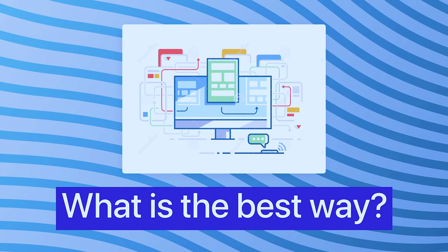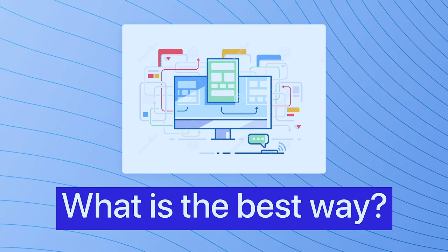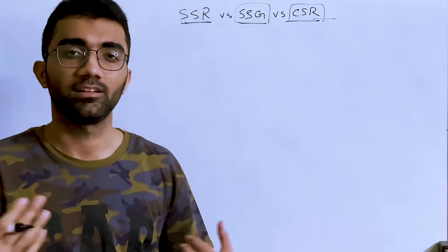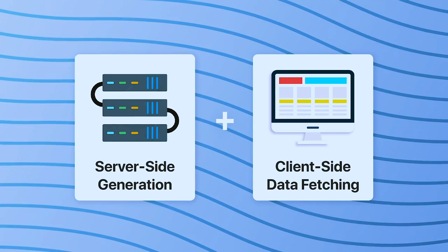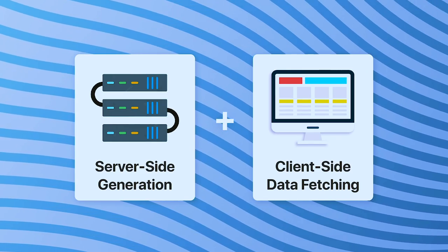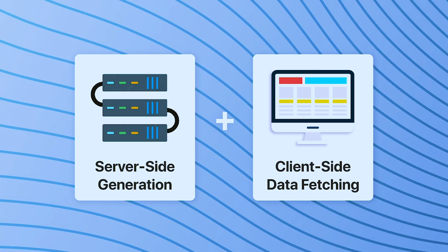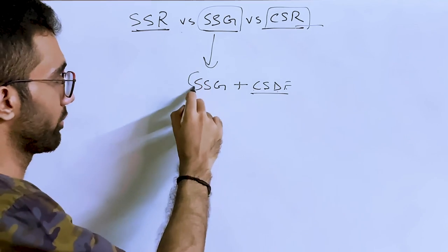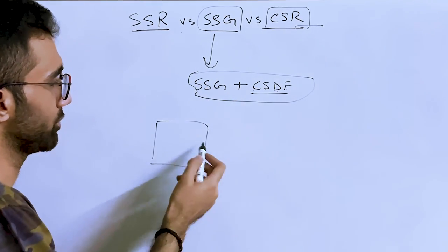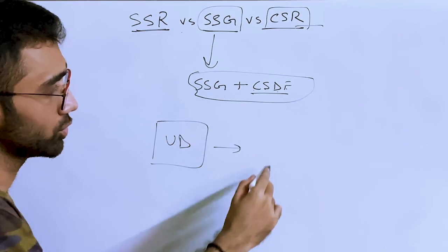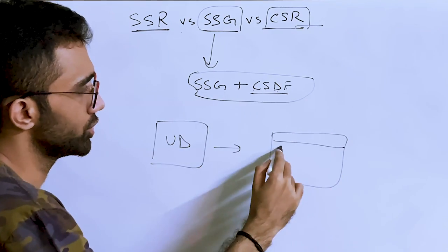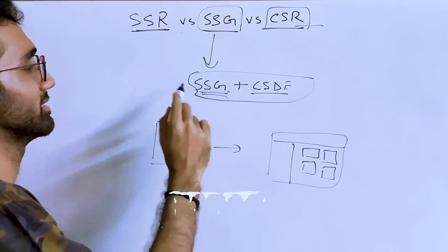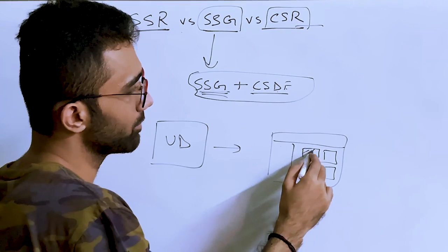What is the best way to structure websites? Server-side generation mixed with client-side data fetching is the best approach whenever possible. For example, if you have a user dashboard, render the static parts as server-side generated (to get CDN performance), while dynamic parts unique to the user can be brought in by calling a certain API endpoint.